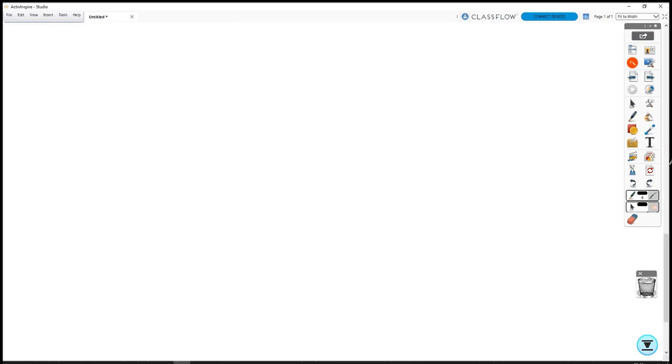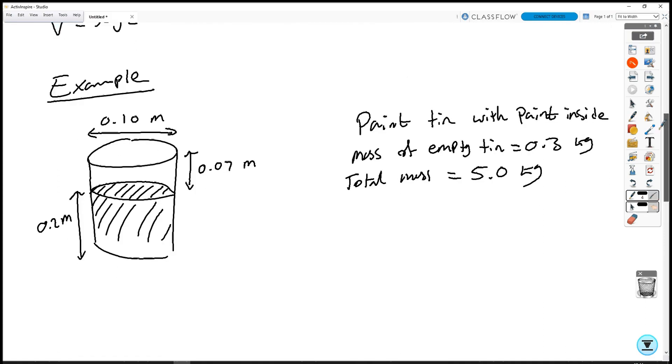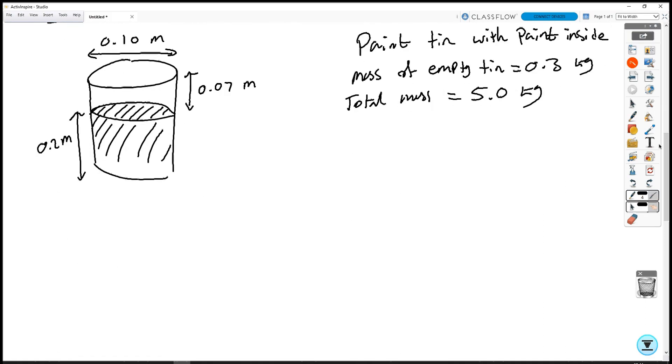So if we wanted to work out the density of the paint, we first need to work out the mass of the paint. Mass paint equals the total mass minus the mass of the tin. So mass of paint is going to be 5.0 minus 0.3. That gives us 4.7 kg.